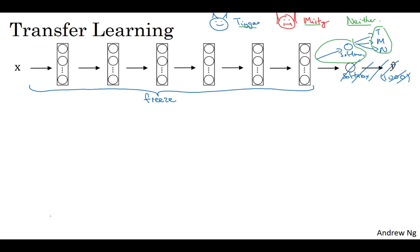And by using someone else's pre-trained weights, you might be able to get pretty good performance on this even with a small dataset. Fortunately, a lot of deep learning frameworks support this mode of operation. And in fact, depending on the framework, it might have things like trainable parameter equals zero.